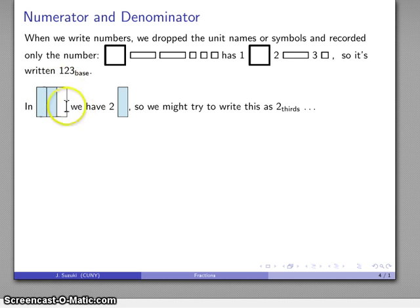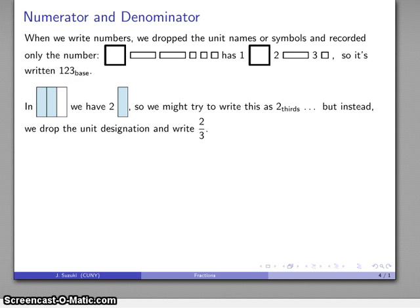So in this amount what I have is two of these things. I could write this as two-thirds, and the spelled out 'third' here is a reference to the fact that each one of these rectangles is one-third. But instead I'm going to drop the unit designation and write this as two over three, and so I have this form of my fraction.